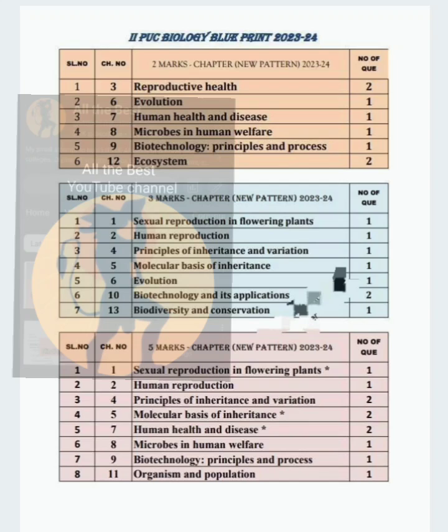The Reproductive Health, chapter number 3 — you are going to get 2 questions. Chapter number 6, Evolution — you are going to get 1 question for 2 marks. Chapter number 7, Human Health and Disease — 1 question. Chapter 8, Microbes in Human Welfare — only 1 question for 2 marks. Chapter 9, Biotechnology Principles and Processes — only 1 question for 2 marks. Twelfth chapter, Ecosystem — for 2 marks, you are going to get 2 questions.